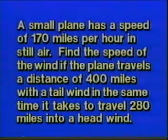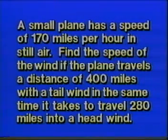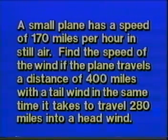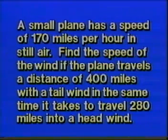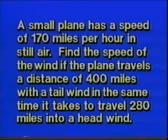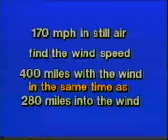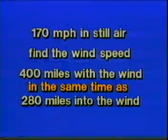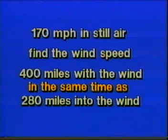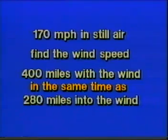As we read through this next problem, look for a statement of equality somewhere. A small plane has a speed of 170 miles per hour in still air. Find the speed of the wind if the plane travels a distance of 400 miles with a tailwind in the same time it takes to travel 280 miles into a headwind. That phrase 'in the same time' is what we're looking for — it will become the basis of our overall equation for a solution.